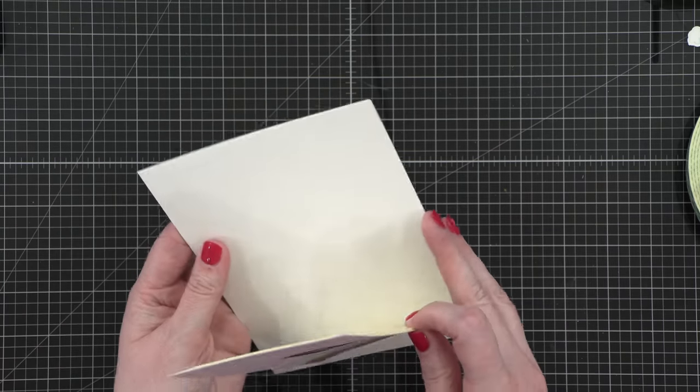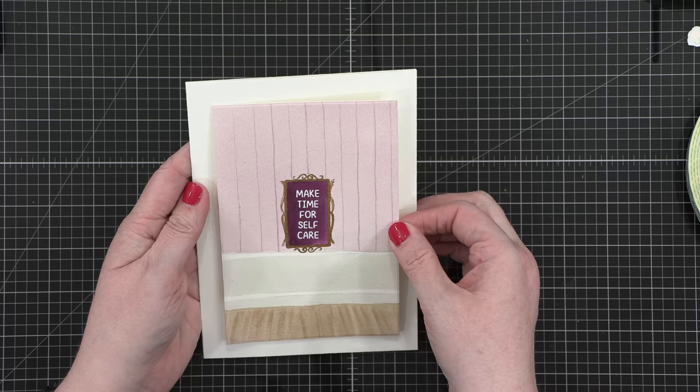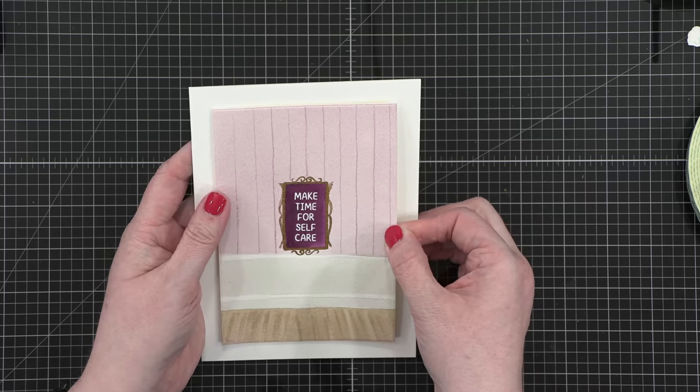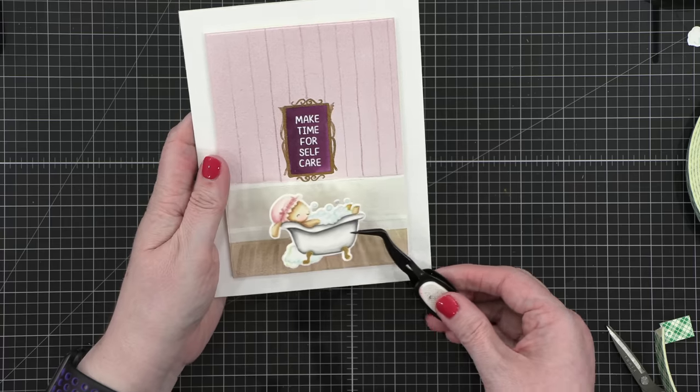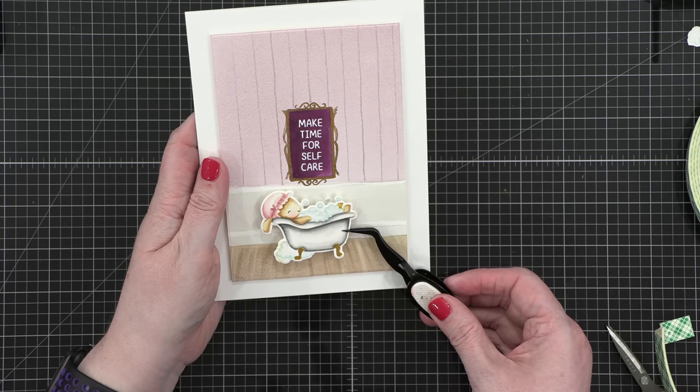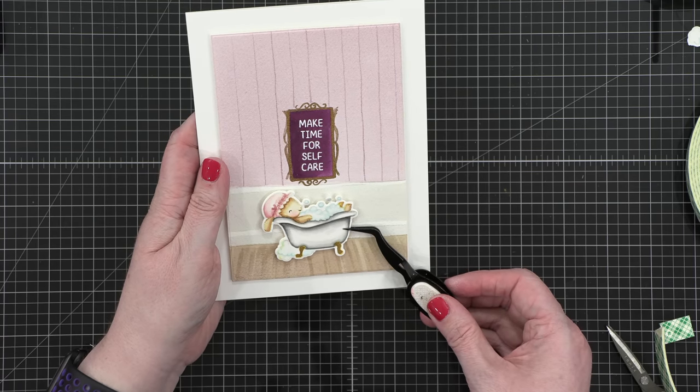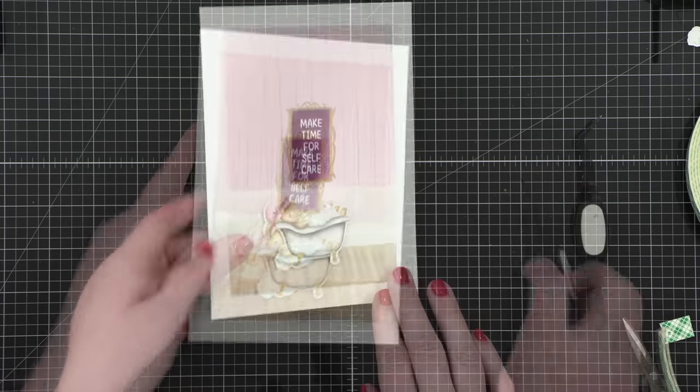And then put some foam adhesive on the back of my watercolor panel and put it directly down onto a five-by-seven card base. This is the basic design of my card. All I have to do is put my little bunny in a bathtub right on top and we have a finished card.